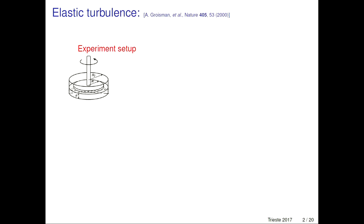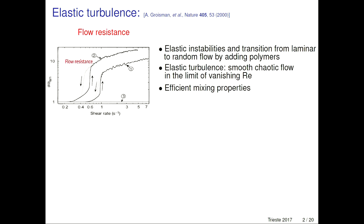A model system with this type of elastic property is known as elastic turbulence. It was experimentally discovered in 2000 by Victor Steinberg and Alexander Groisman. They chose a very simple geometrical setup — a rotating disc configuration where the lower disc was kept fixed and the upper was rotating. What they observed in their experiment, with the addition of polymer, was the onset of elastic instabilities and the transition from laminar to chaotic random flow.